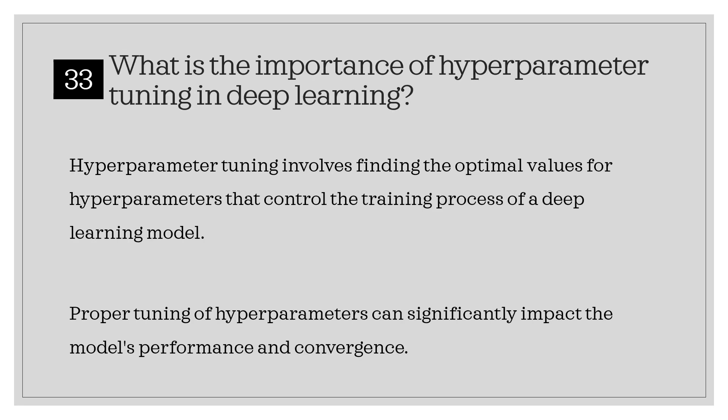What is the importance of hyperparameter tuning in deep learning? Hyperparameter tuning involves finding the optimal values for hyperparameters that control the training process of a deep learning model. Proper tuning of hyperparameters can significantly impact the model's performance and convergence.